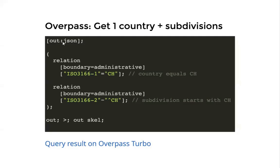What I'm doing here is: first, I say I want to output JSON. Then I want to get the administrative boundary of the relation in OpenStreetMap that has the country code CH. I also want to get all administrative boundaries — all the relations where the subdivision code starts with CH — because codes always start with the two-letter country code followed by an additional code for the subdivision. In Switzerland that's the 26 cantons. And then some additional magic code says: now that I have the country and 26 cantons, not only give me the metadata but also all the points, ways, and things they contain, so I can extract the geometry and convert it to GeoJSON.